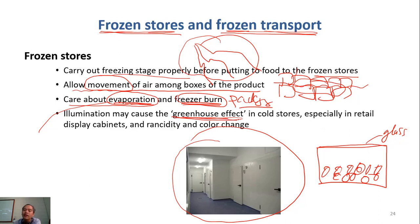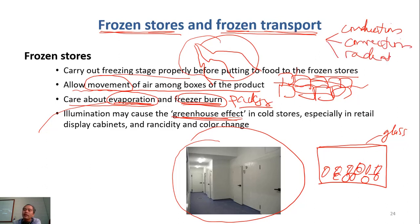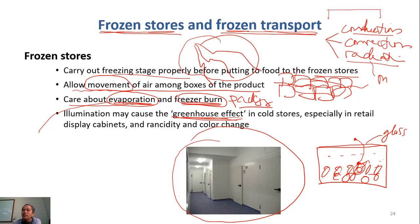This type of frozen display can experience the greenhouse effect due to heat transfer by radiation. There are three mechanisms of heat transfer: conduction, convection, and radiation. Heat can transfer through radiation, so the temperature of the food may increase even though the freezer temperature is low. Conduction, for example, is when you heat one end of a metal rod and after a while you feel heat at the other end — heat transfers through the material without material movement.